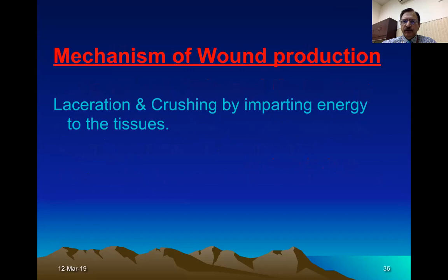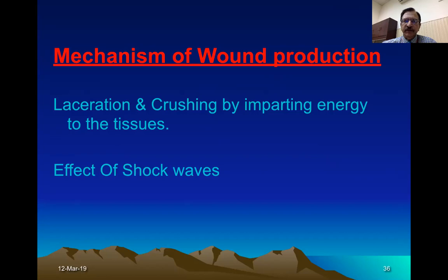The mechanism of wound production involves laceration and crushing by imparting energy to the tissue. Because the bullet travels at high speed, its energy is transferred to the tissues, which then start moving forward and outward at the same speed, causing extensive laceration and crushing. Additionally, shock waves travel along the bullet with a wider span, producing damage larger and more distant than the bullet's direct path.